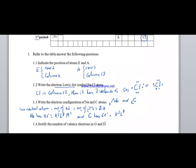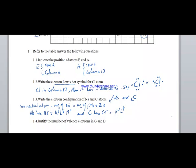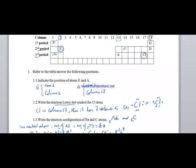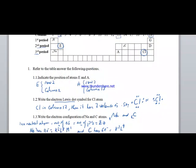To justify the number of valence electrons, we explain G and D. G and D are in column 18. G is in row 1 and D is in row 2. Column 18 means the energy levels are saturated.